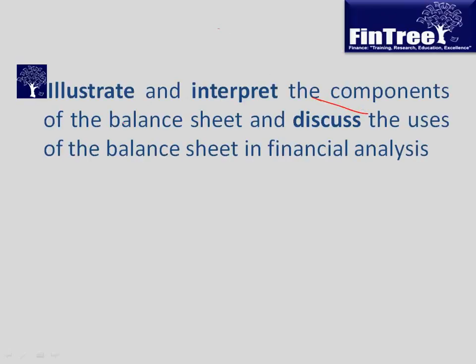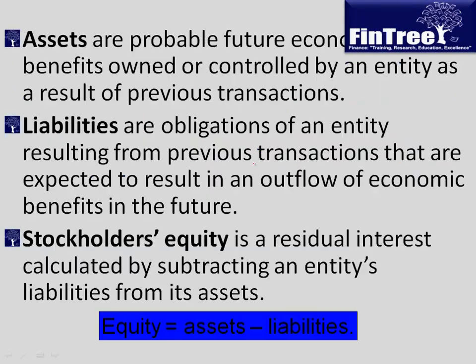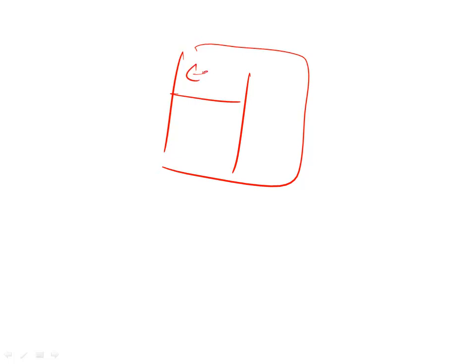This is the first syllabus topic, which talks about components of a balance sheet and uses of the balance sheet in financial analysis. We have something called assets, something called liabilities, and something called equity. By this time you would know that equity plus liability is equal to your assets.